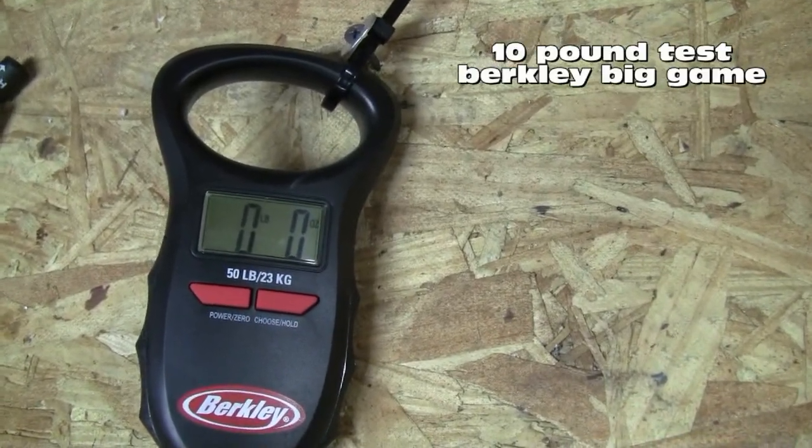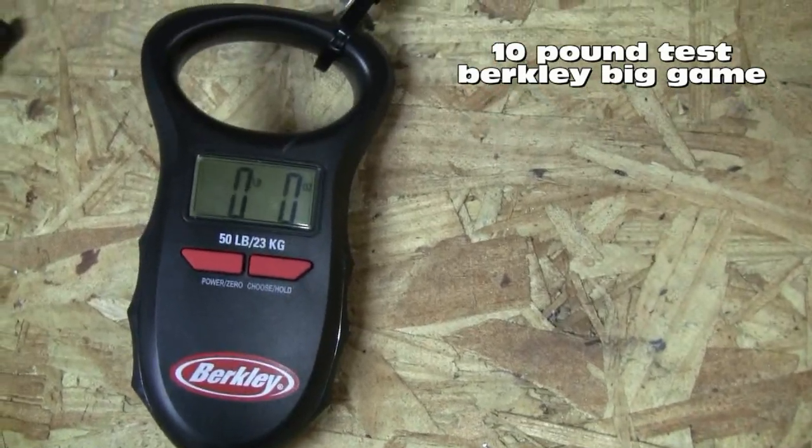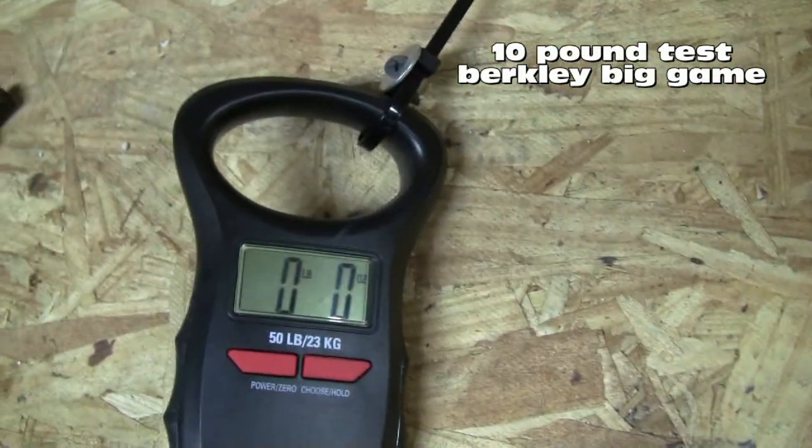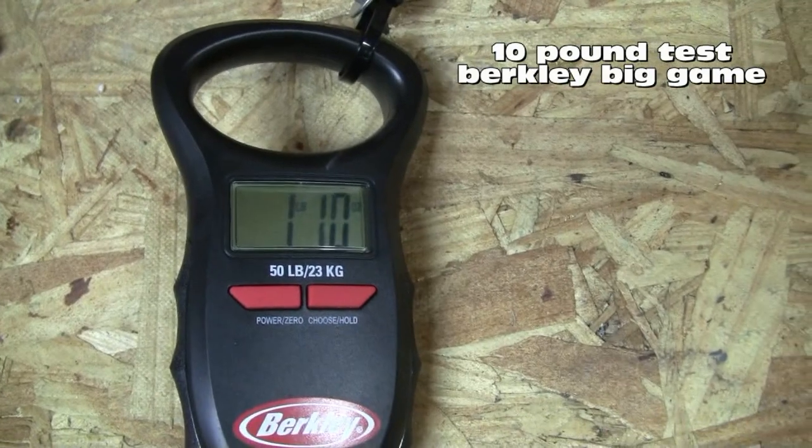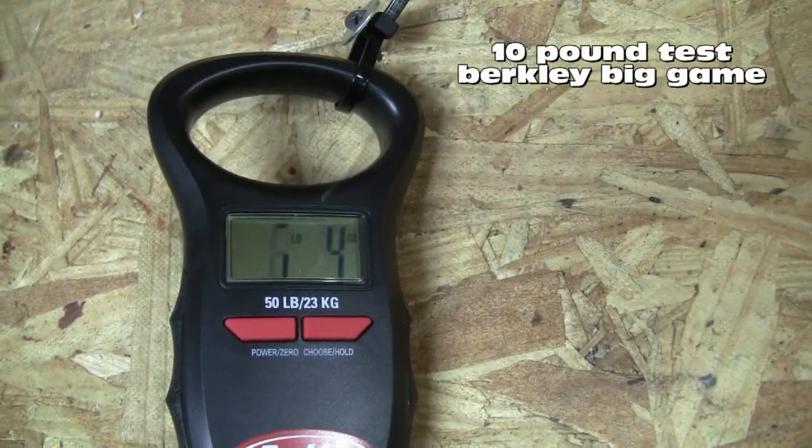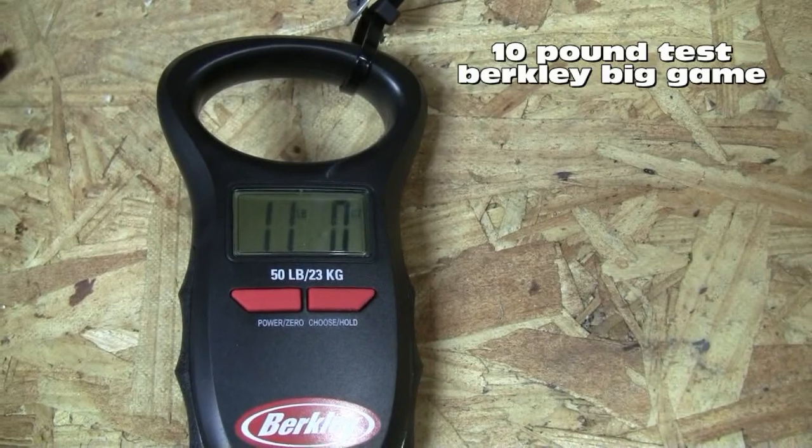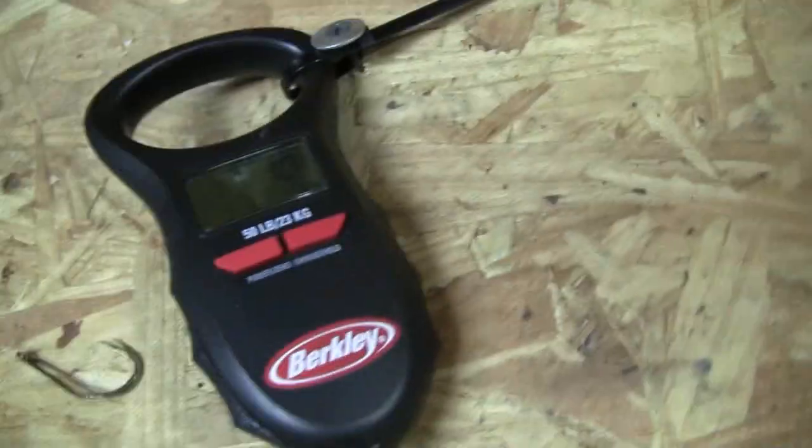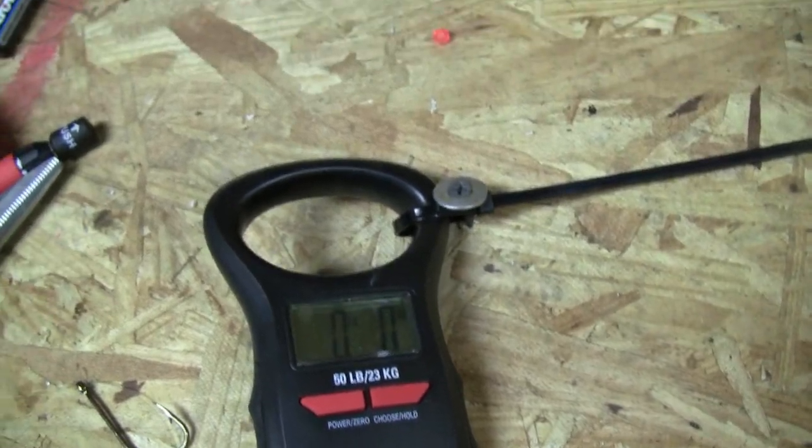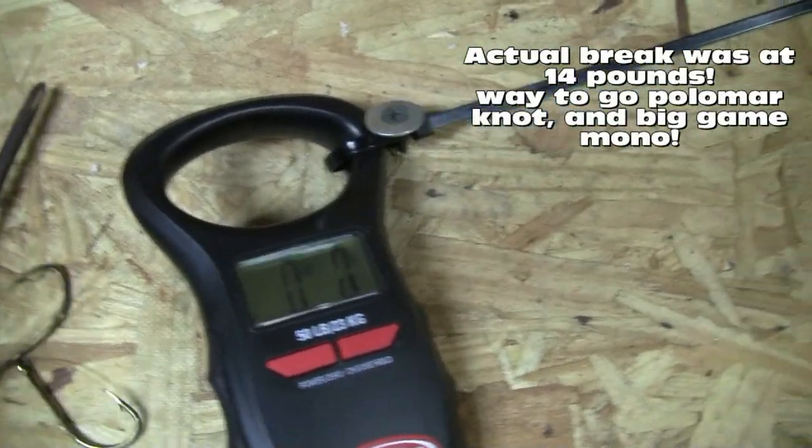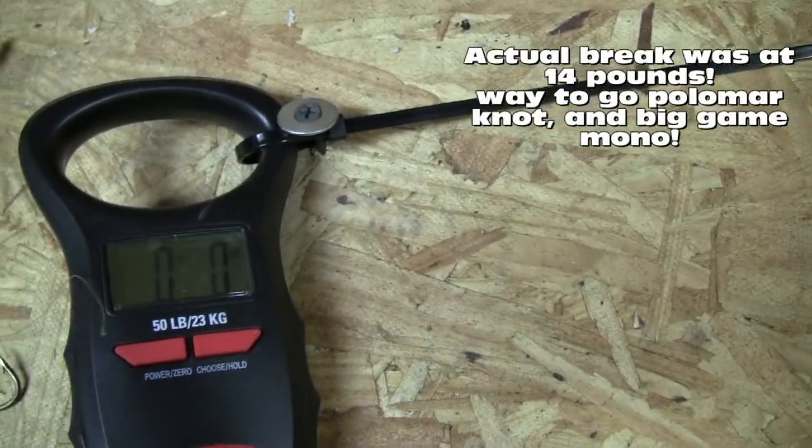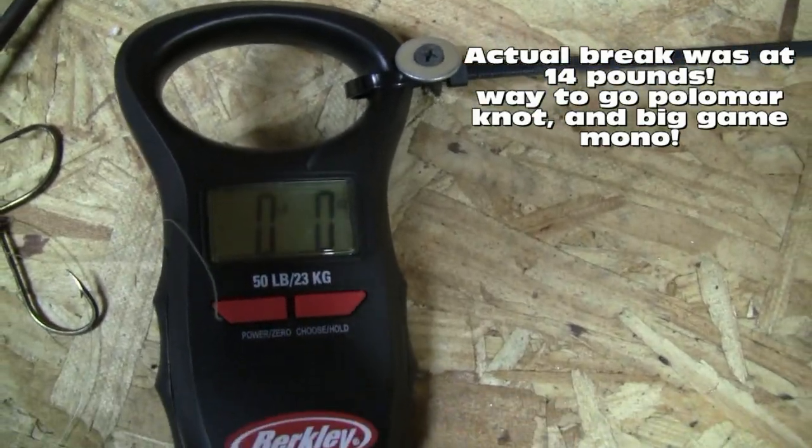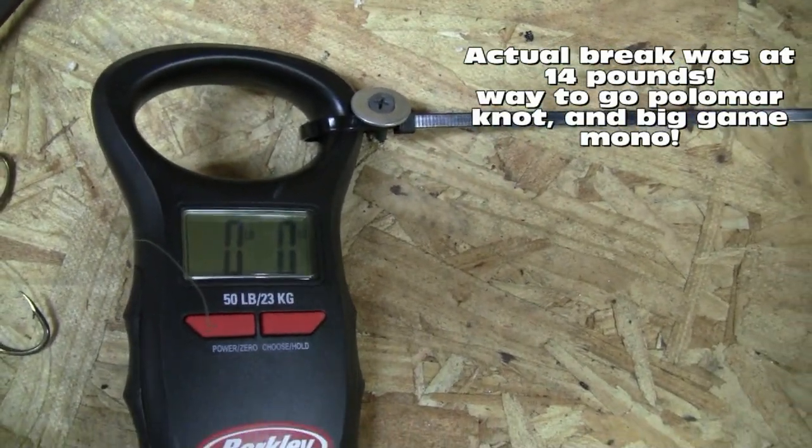We're at 11, 12... oh, looks like that was about 13 pounds of break strength out of 10 pound test monofilament.